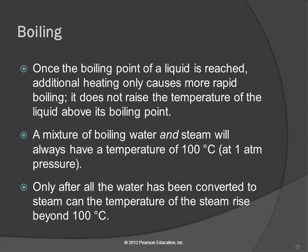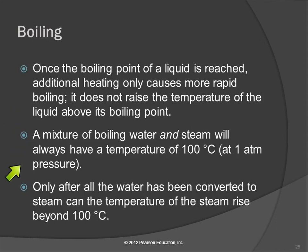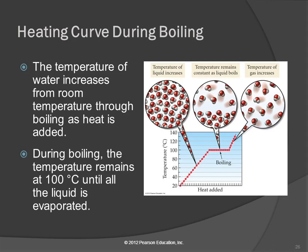Once you hit the boiling point, it doesn't matter how much extra heat you add — it's just going to make it boil faster, not increase the temperature above the boiling point. Any time you have a mixture of boiling water and steam, it's always going to be 100 degrees Celsius at one atmosphere. It's only after all the water has been converted to steam that the temperature will go up — that's when you left the pot on the stove and forgot about it.